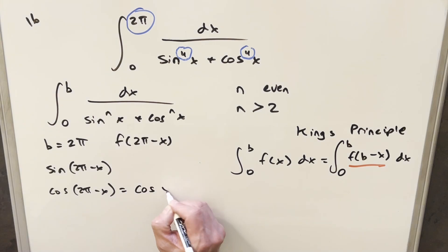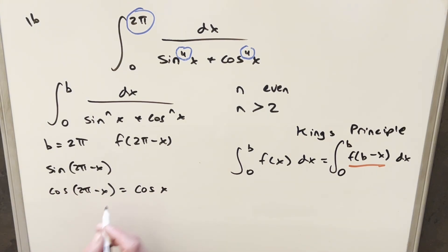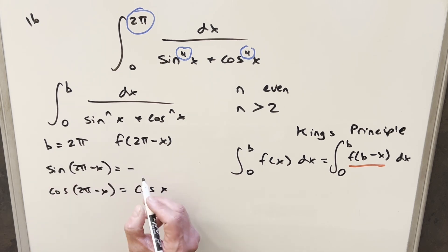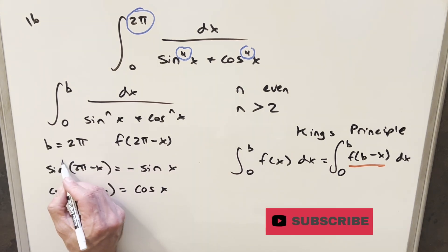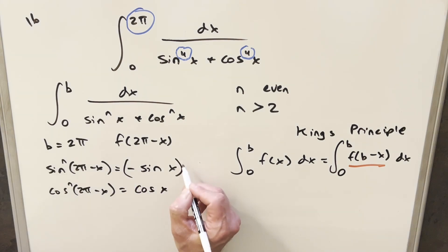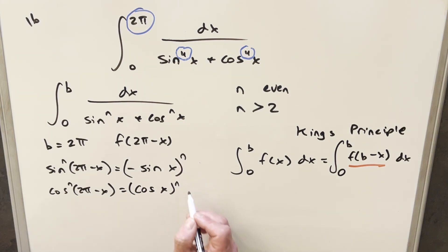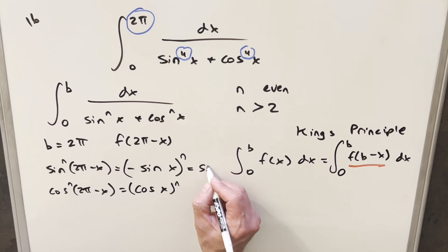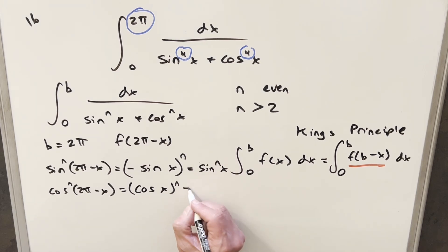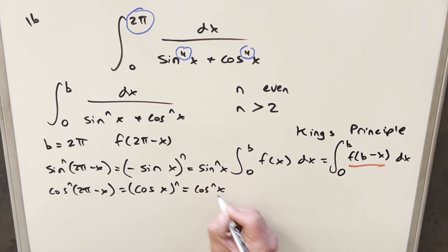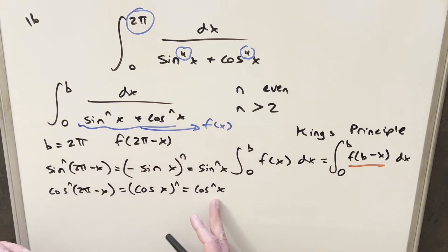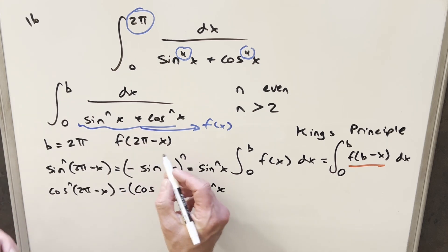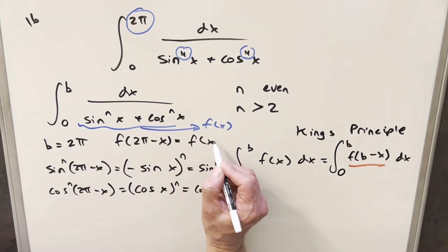These values are easy. sin(2π − x): cosine is an even function, so shifting by 2π gives cos(x). For cos(2π − x), sine is odd, so we get −sin(x). But because n is even, raising to the nth power wipes out that minus sign. So sin^n(2π − x) = sin^n(x) and cos^n(2π − x) = cos^n(x). Putting it together, f(2π − x) = f(x).